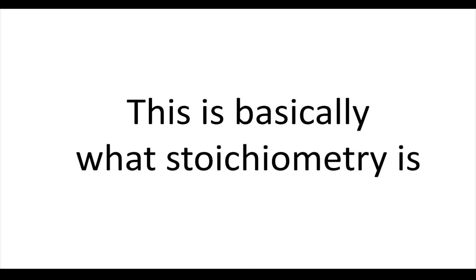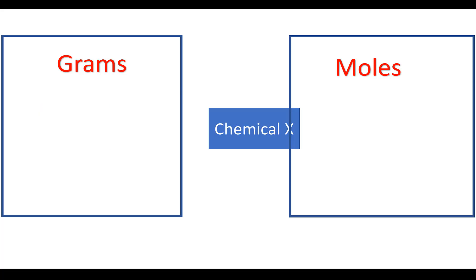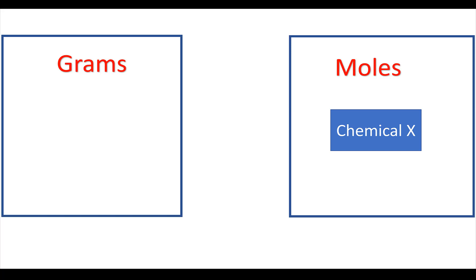This is what we do when we do stoichiometry. We don't cheat, but we just move things around. We have a certain chemical currently described in grams. We take the same chemical and describe it in terms of moles instead.